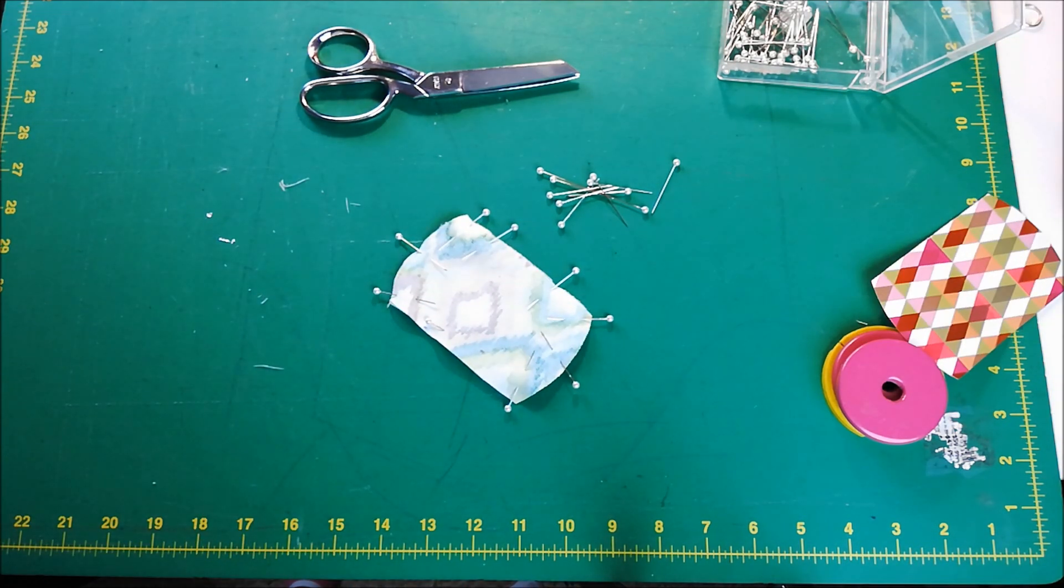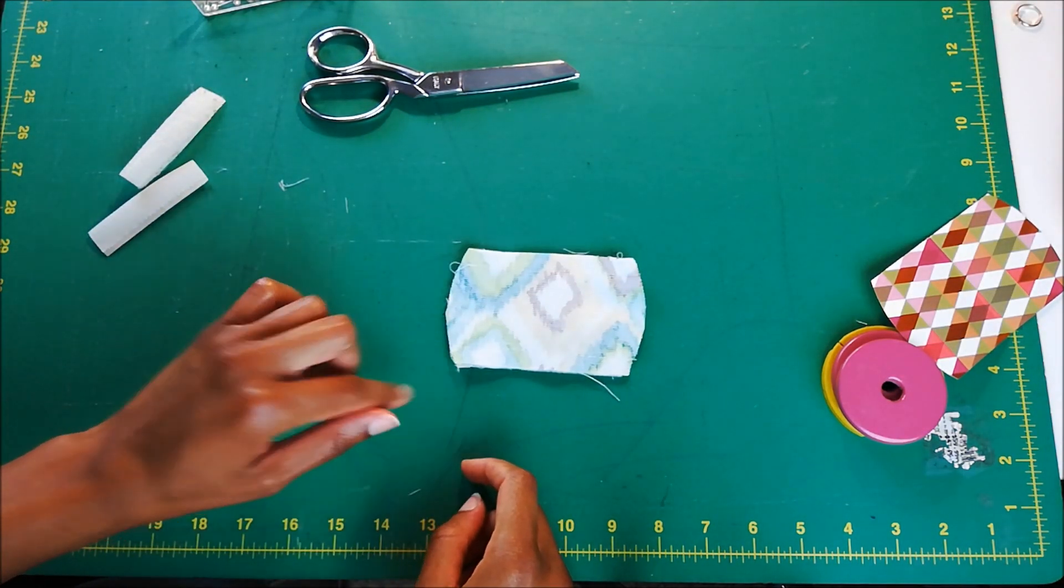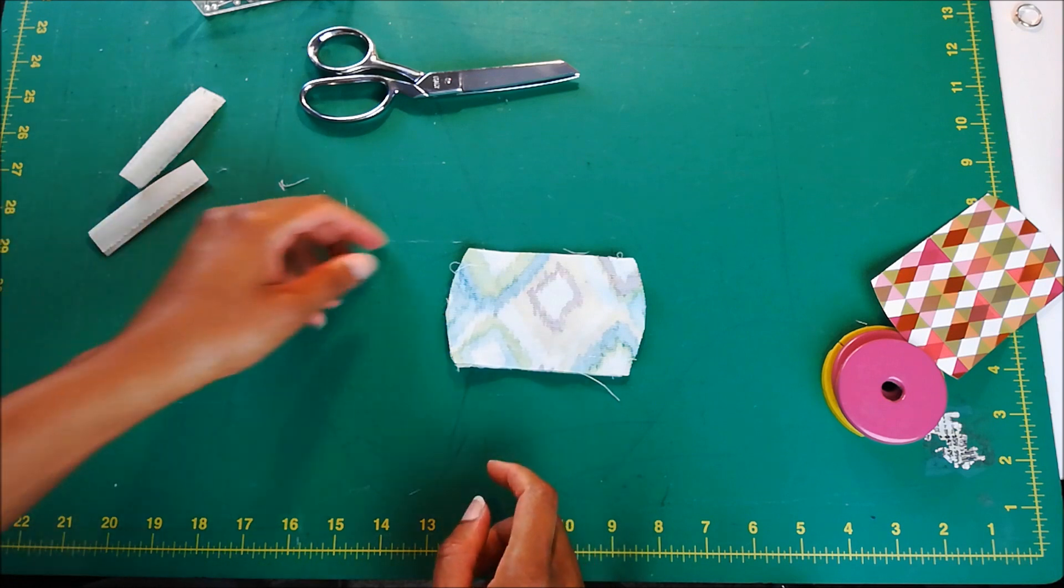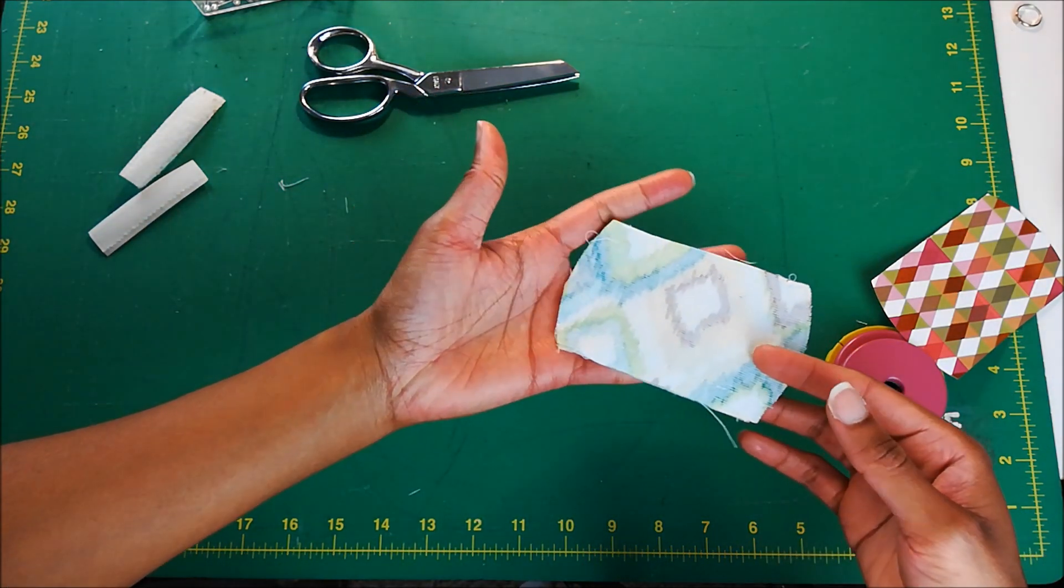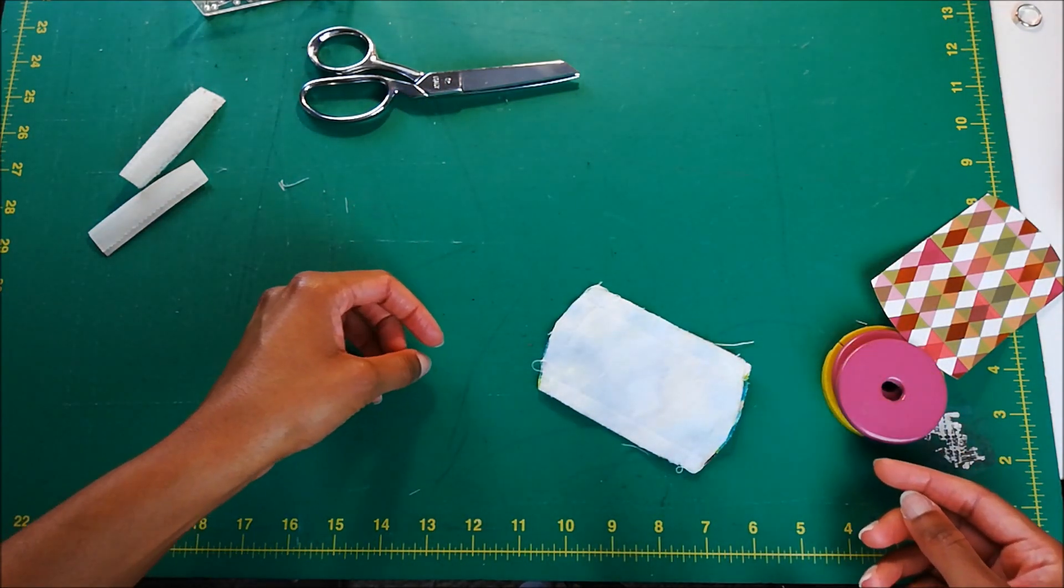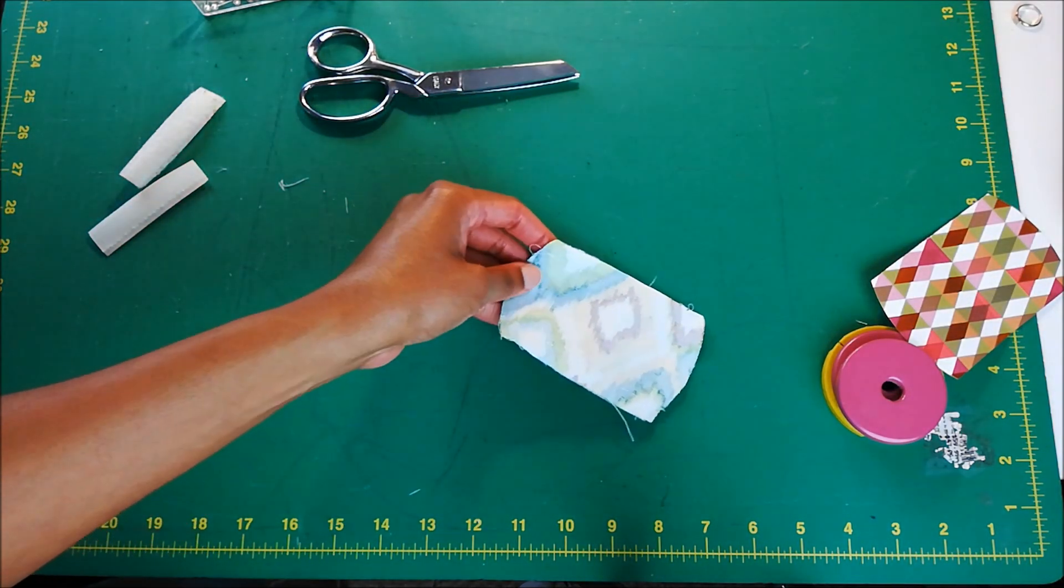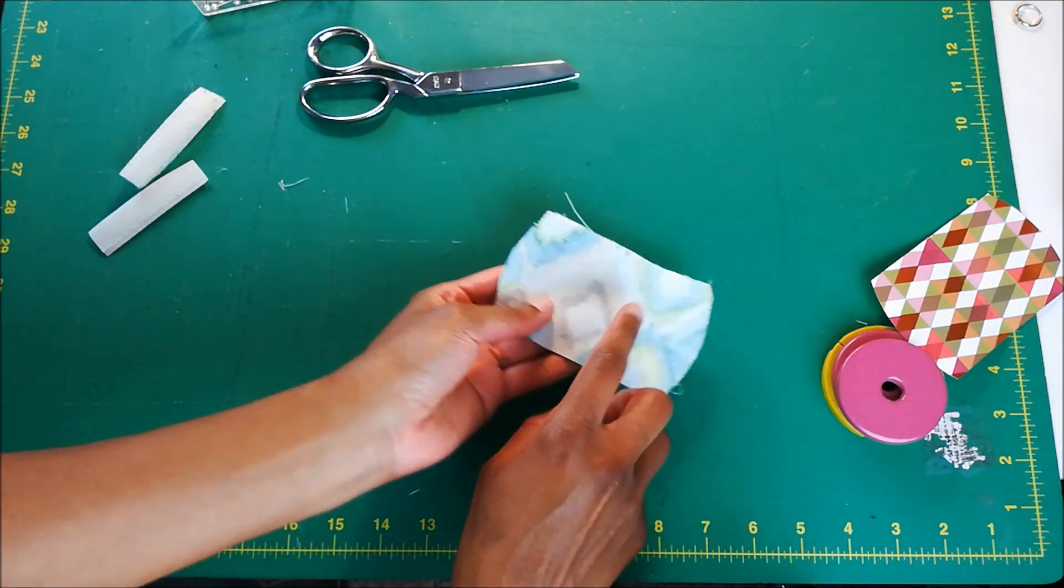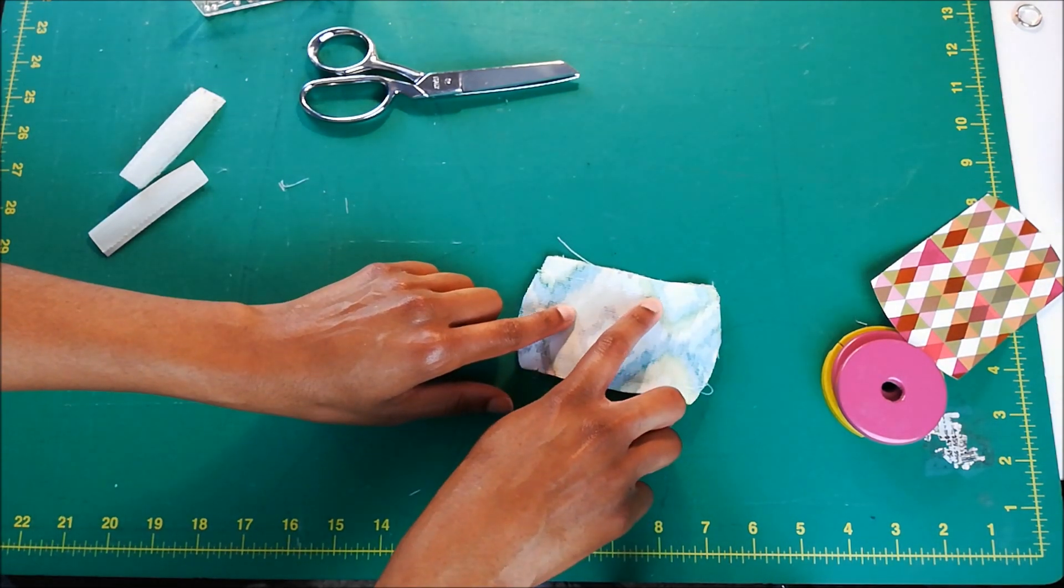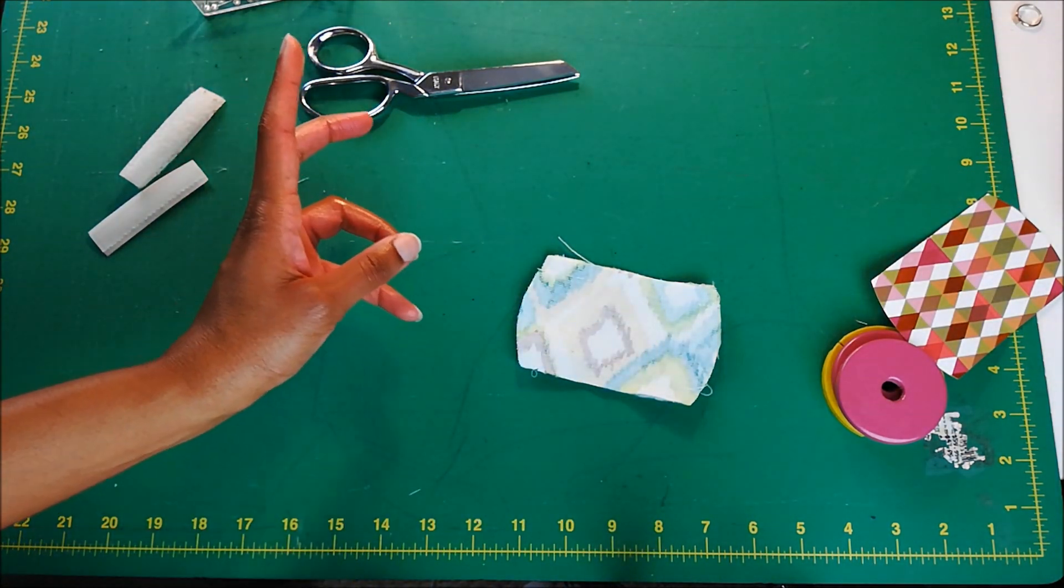Now I'm going to take it over to my machine and sew it at 3/8 of an inch seam allowance. Okay, so now that I have all of my sides stitched down, I'm going to go ahead and open up the seam allowances, press it open. Here are my basting stitches here, so I'll remove my basting stitches and flip it inside out.